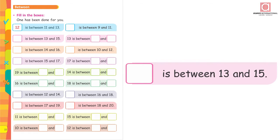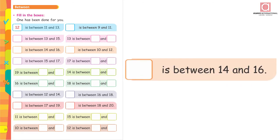Next, dash is between 13 and 15. Now start counting: 13, 14, 15. Yes, in this blank it comes 14. 14 is between 13 and 15. Dash is between 14 and 16. Yes, I am sure you can do it yourselves. 14, 15, 16. So 15 is the number that comes between 14 and 16.